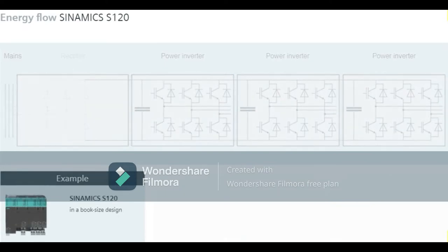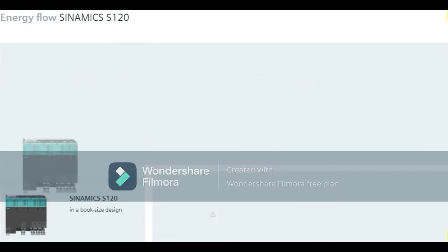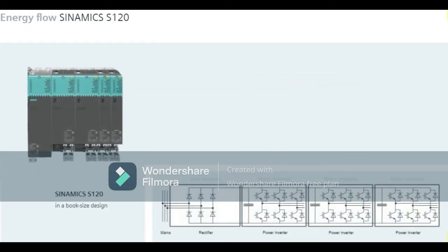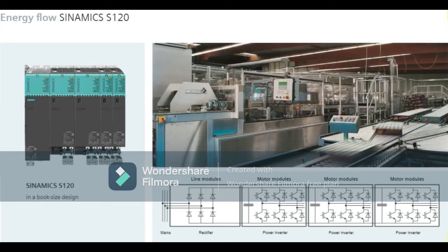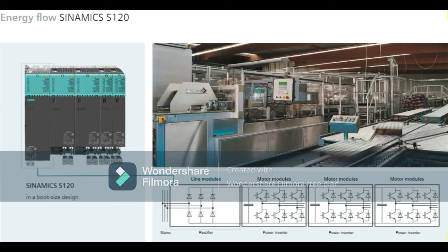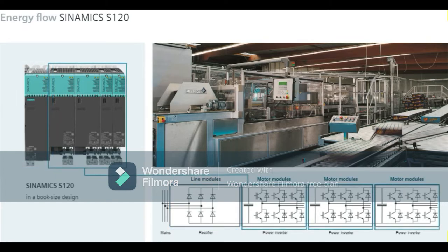Siemens offers a modular multiple motor system in SINAMICS S120, for example. In SINAMICS S120, the feed-in is referred to as line modules, and the motor-side power inverters are called motor modules. There are different versions of the motor modules available to match the motor outputs concerned.